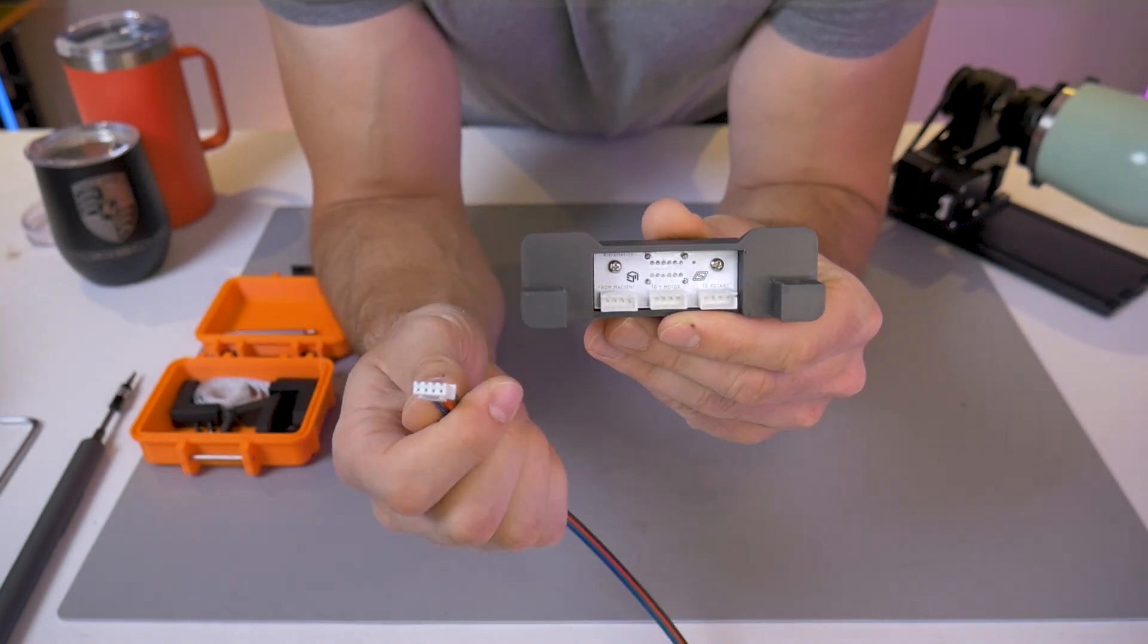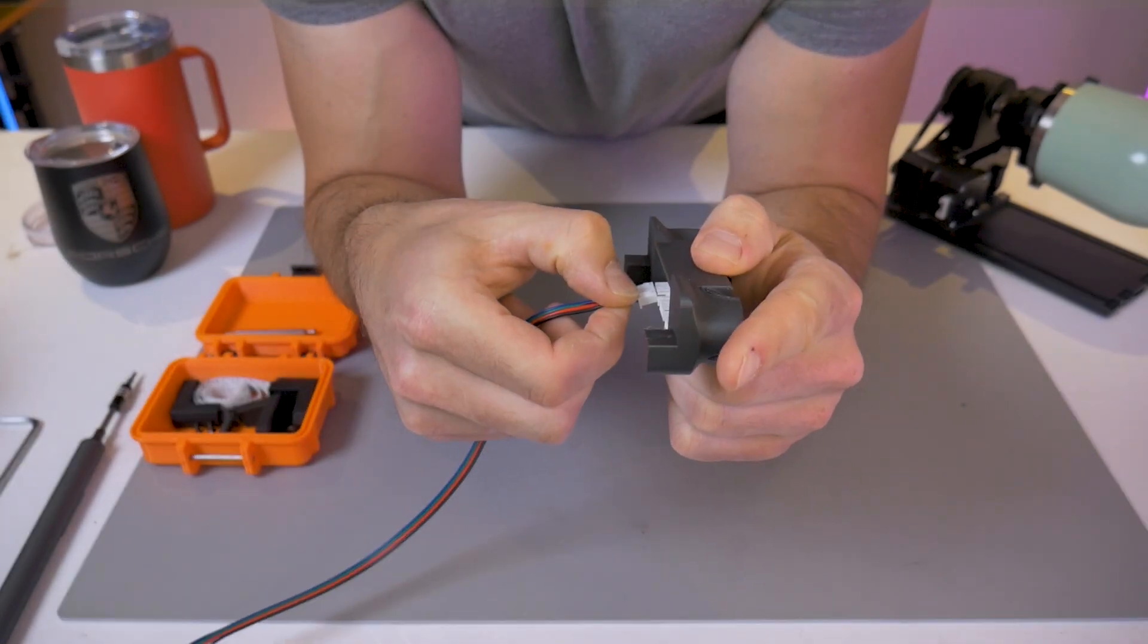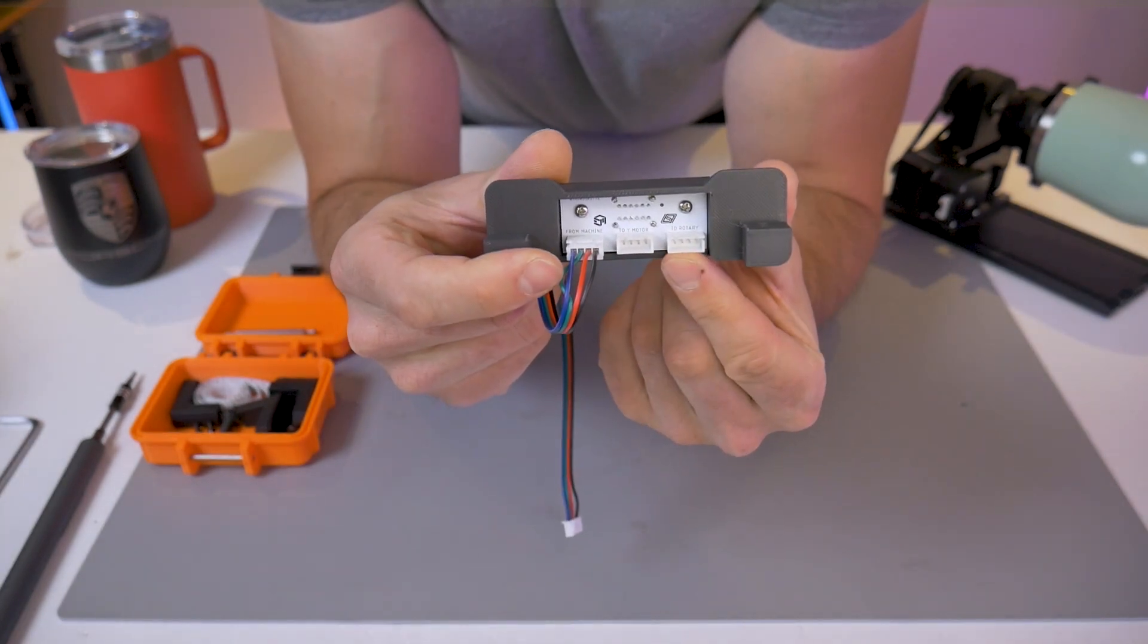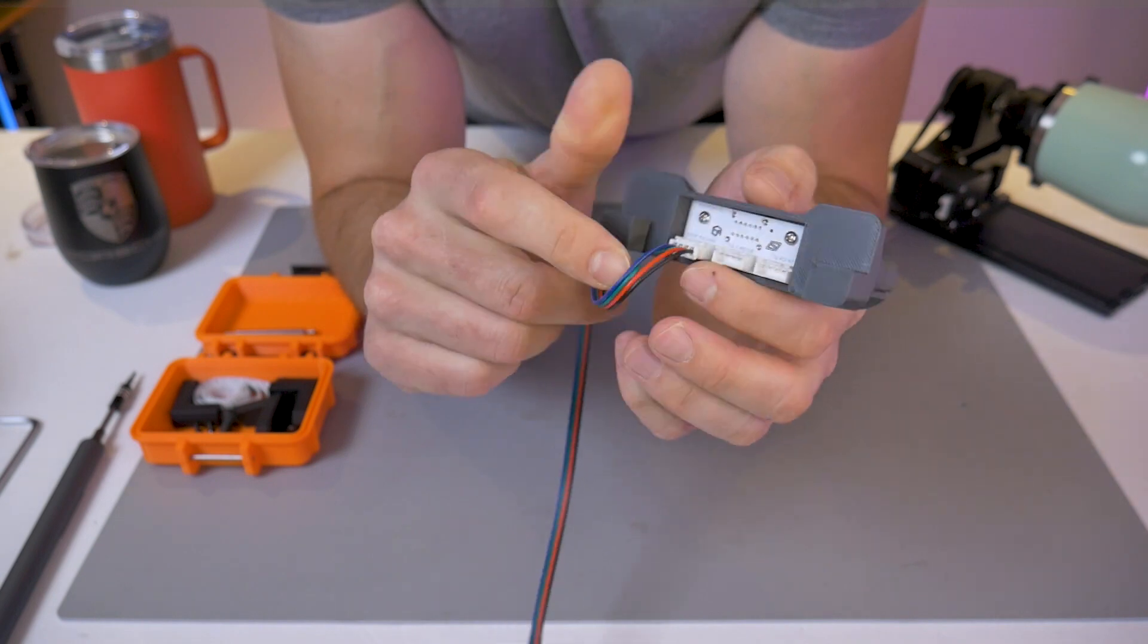When looking at the back of the switch, the far left connector has a label that reads 'from machine,' and this is where you're going to plug in one end of the included wiring harness and it doesn't matter which end.